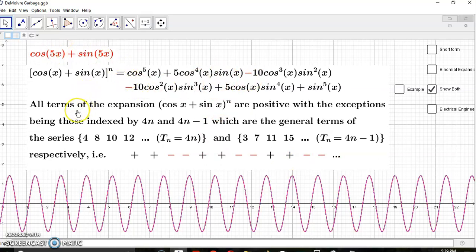In position three, four, six, seven, etc., then this side would actually equal to what you see on the left here. So all the terms of this expansion cos x plus sin x are positive, with the exceptions being those indexed by 4n and 4n minus 1. And of course the ones that are positive are indexed by 4n minus 2 and 4n minus 3. But these are the general terms of the series that you see in front of you.